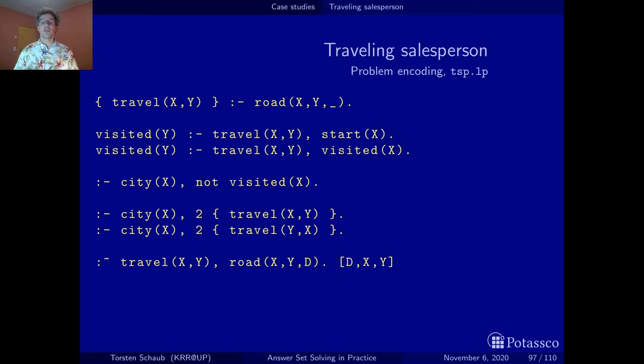In this way whenever you travel you induce a penalty and whenever there are weak constraints in the code they instruct the solver to look for the solution with the smallest sum of penalties. This is actually how you can compute a solution to the traveling salesperson problem.